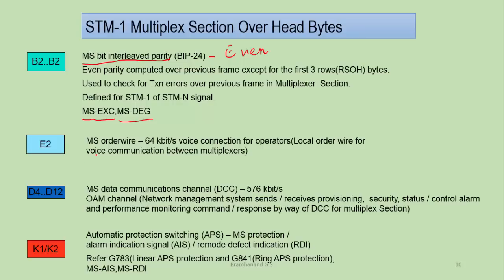E2 byte is the same as E1 byte discussed in regenerator section overhead - also used for order wire, but for communicating voice channels between multiplexers. Data communication channels are similar to what we discussed in regenerator section overhead, but the multiplex section will have nine bytes of data communication channels, giving a total of 576 kbps running between the network and the network management system. These bytes are used specifically for managing and establishing a data communication network between the multiplex section and the network management system.